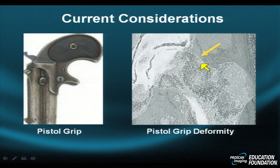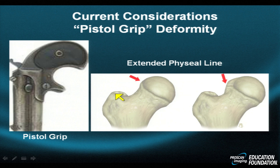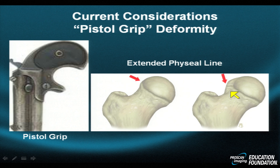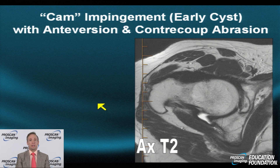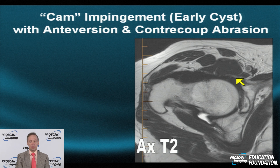This loss of sphericity creates what's known as the pistol grip deformity. Here's a coronal example of the pistol grip deformity versus the normal head, resembling the appearance of a small derringer-type gun. The deformity has an extended, more lateral appearance, creating a rounded, convex-outward shape. With repetitive flexion and varying degrees of adduction, this non-tapered femoral head-neck junction rams into the acetabulum.